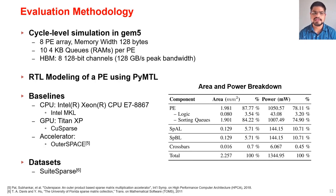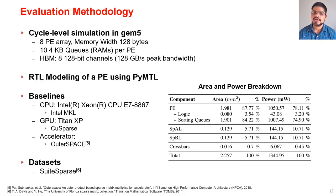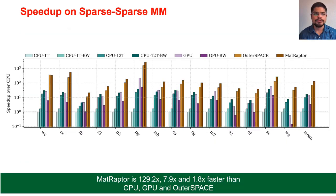For evaluation, we performed cycle-level simulation with an 8-PE array and a memory width of 128 bytes. We used 10 four-kilobyte queues and HBM with 128 Gbps peak bandwidth. We modeled a single PE in RTL using PyMetal. Our baselines were Intel MKL on CPU, cuSPARSE on GPU, and OuterSPACE for accelerator. The area and power breakdown shows that most of the area and power is consumed by the queues and SRAMs, which is expected since sparse MM is a highly memory-bound application. We used the SuiteSparse dataset.